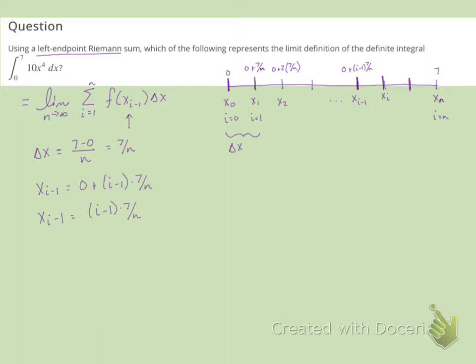So now we can put this back into our limit. So we'll have the limit as n approaches infinity of the sum from i equal 1 to n of f of x sub i minus 1, which is now i minus 1 times 7 over n, times delta x, which is 7 over n.